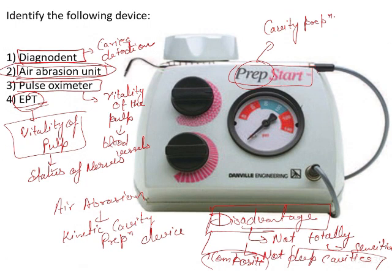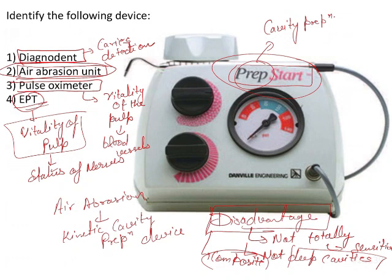To summarize, this device prepares tooth structures using a stream of small particles — most commonly alumina particles around 27 microns, though 50 micron particles are also used. Using 50 micron gives a larger conservative cavity preparation, while 27 micron gives more controlled, smaller conservative cavity preparation. So the answer to this question is, of course, the air abrasion unit — option two.